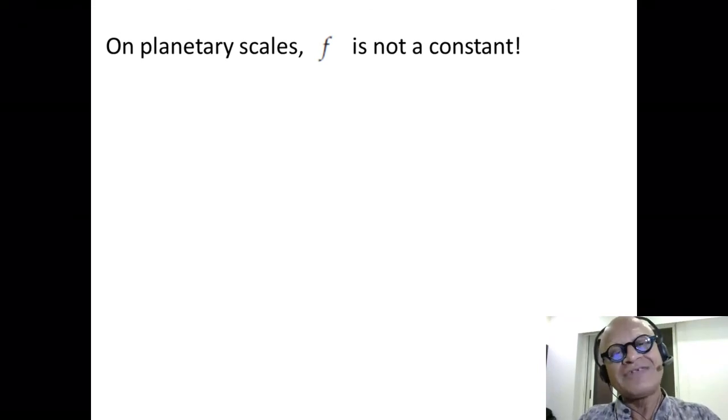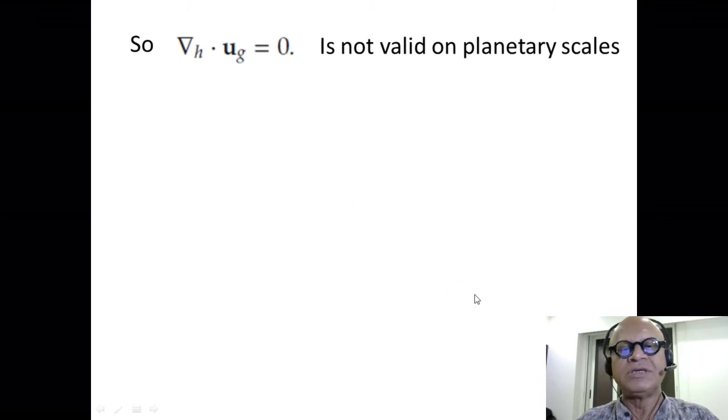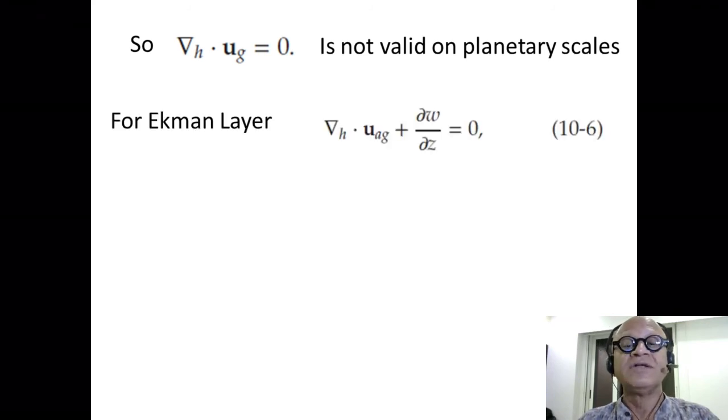So, you can revise that by going back to the appropriate podcast. Nonetheless, on planetary scales, F is not a constant and that's what gave us df/dy of beta. So to recap, the divergence of u-geostrophy is minus beta over F v_g. Okay? This has consequences. So the geostrophic flow is not divergent on, is not non-divergent on planetary scales, okay?